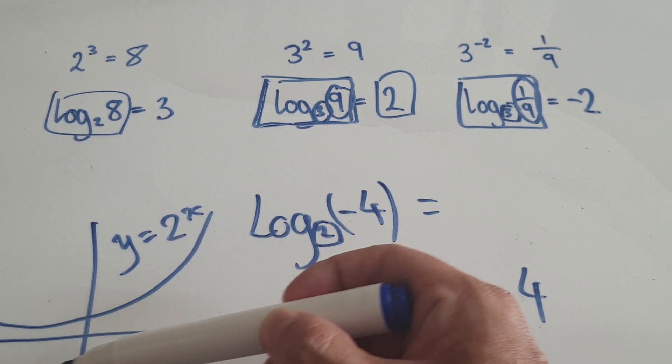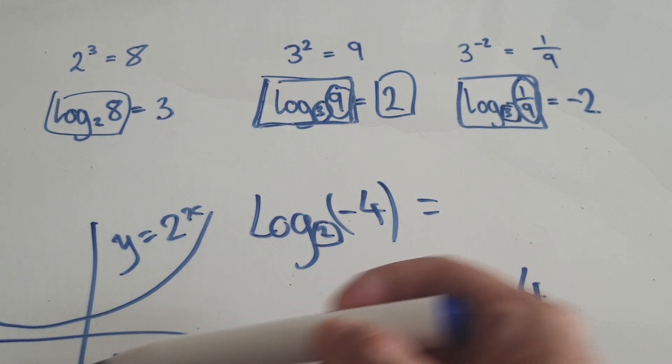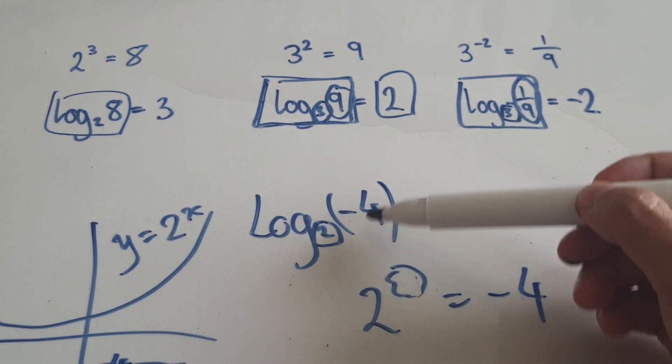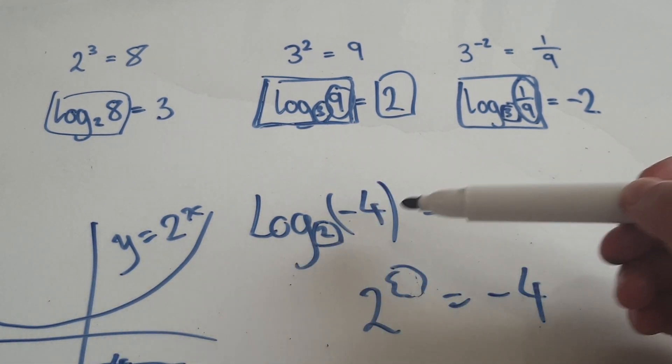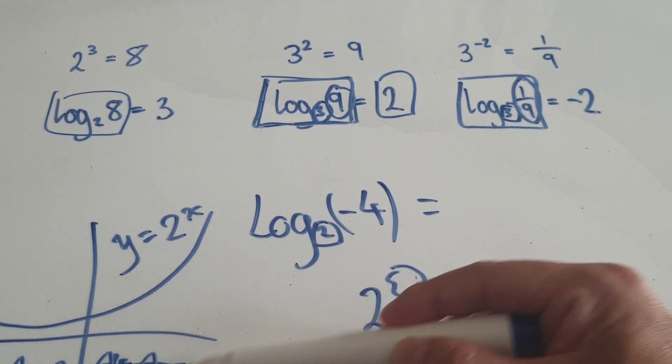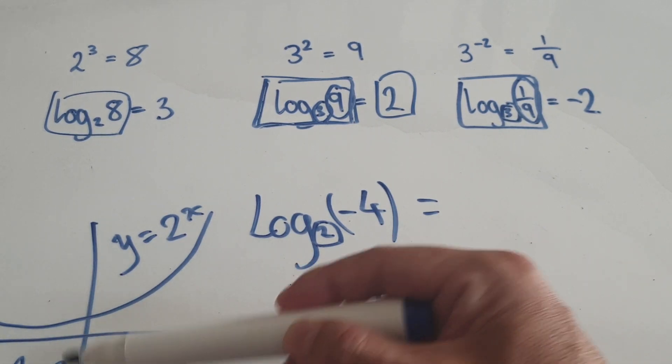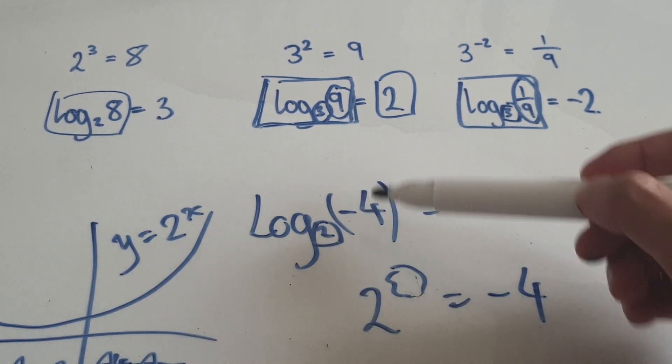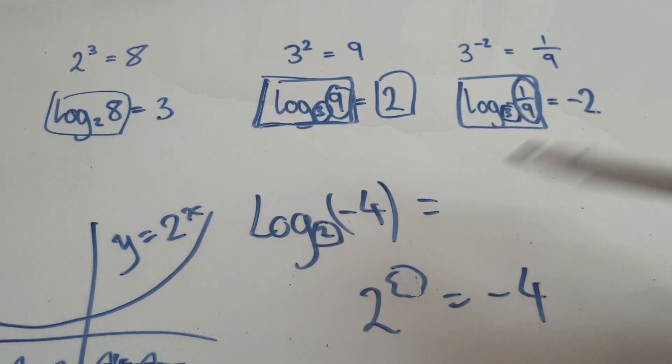Negative 4 is down here — you can't really log a negative number because you're never going to be in the negative realm. So this is a trick question — it can't be done.